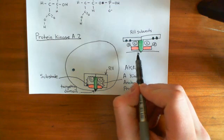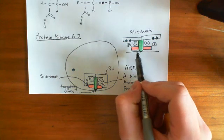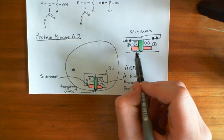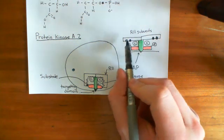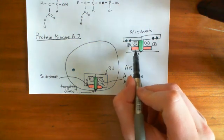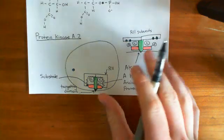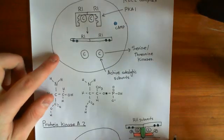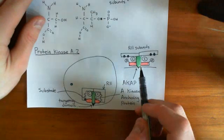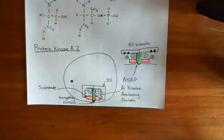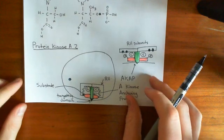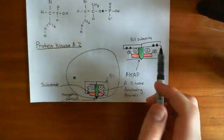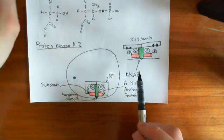This means you can have much, much more specific actions. When cyclic AMP goes up, you specifically activate this effector — not just any effector as in the case of Protein Kinase A1s. Protein Kinase A2s have a much more specific role: they activate a specific effector which is in this complex with them. The structure which holds this whole complex together is the A-kinase anchoring protein.